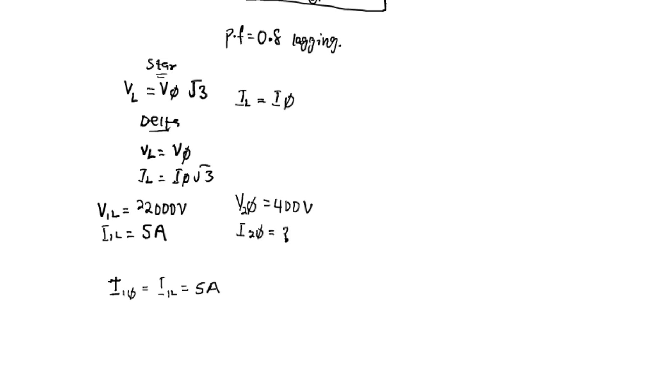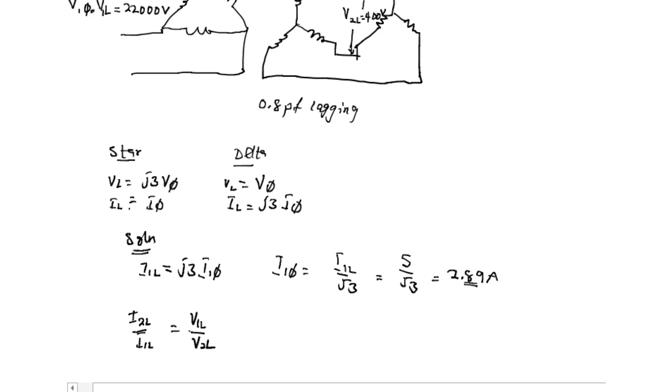To find the current of the secondary, we use the relation V1L × I1L equals V2L × I2L. Since the line current of the transformer on the secondary is the same as the phase current, it follows that I2L equals V1L divided by V2L times I1L. This is 5 times 22,000 divided by 400, which equals 275 amperes.